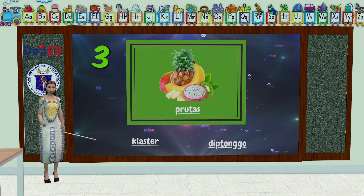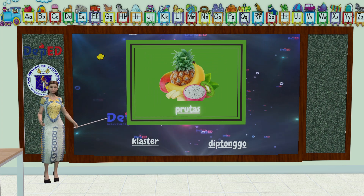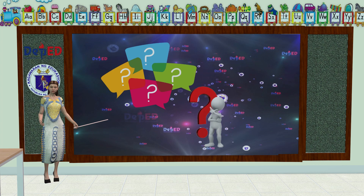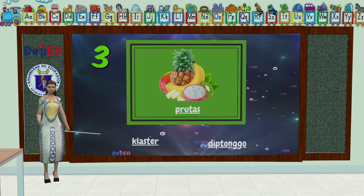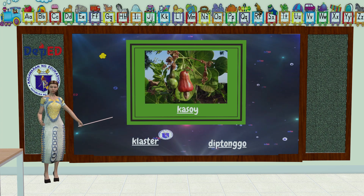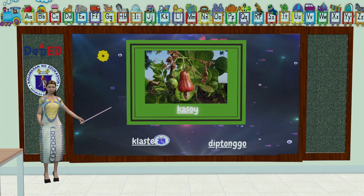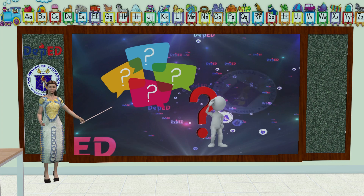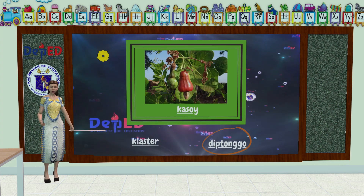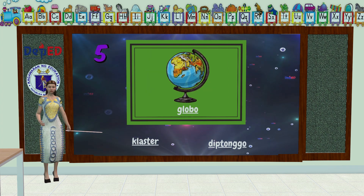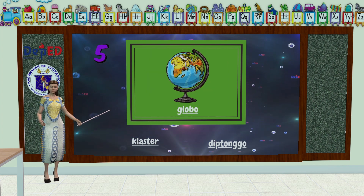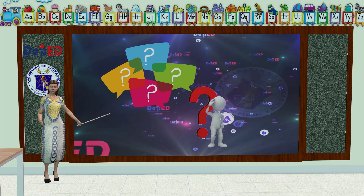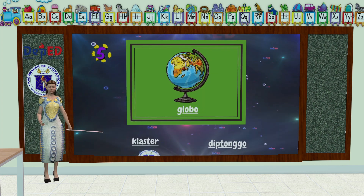Tingnan naman natin ang pangatlong salita: Prutas. Ang salitang ito ay cluster. Tingnan natin ang pangapat na salita: Kasoy. Ang salitang kasoy ay diptonggo. At ang panghuling salita ay globo. Ang tamang sagot dito ay cluster.